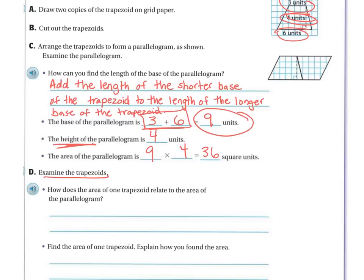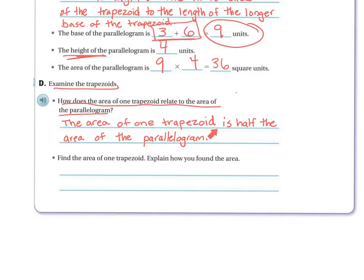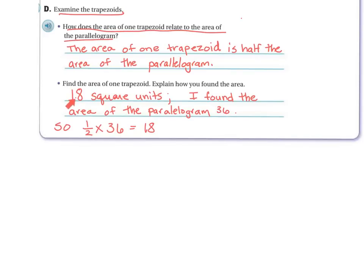Let's examine the trapezoid. How does the area of one trapezoid relate to the area of the parallelogram? The area of one trapezoid is half the area of the parallelogram. The answer is 18 square units. I found the area of the parallelogram, which was 36, then one half times 36 equals 18, because half of 36 is 18.